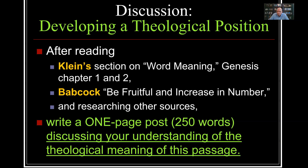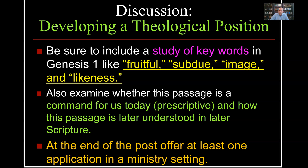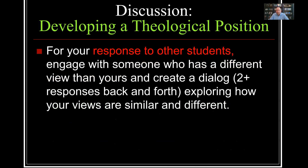After reading Klein's section on word meaning, reading Genesis 1 and 2 in context, and reading the chapter I wrote — 'Be Fruitful and Increase in Number' — in your reading assignments, I want you to create a one-page, 250-word post discussing your understanding of the theological meaning of this passage. Be sure to include a study of key words in Genesis 1 like 'fruitful,' 'subdue,' 'image,' and 'likeness.' Also examine whether this passage is a command for us today and how it is later understood in Scripture. All Scripture is congruent and consistent, so if this passage is interpreted somewhere else in the Bible, it should tell us something God has to say about it. At the end of the post, offer at least one application in a ministry setting.